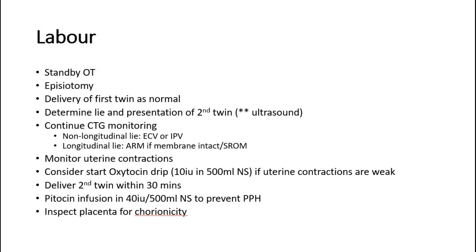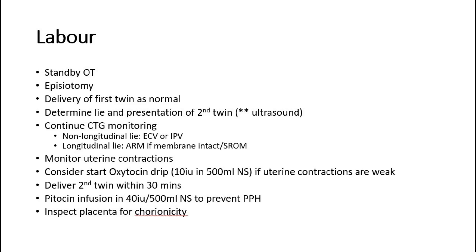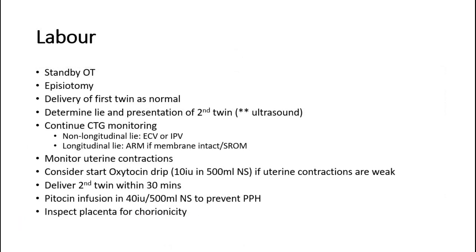During labour, have the OT on standby and perform episiotomy. Deliver the first twin as a normal delivery. After delivery of the first twin, determine the lie and presentation of the second twin via ultrasound and continue CTG monitoring. If the second twin is in a non-longitudinal lie, perform external cephalic version, or if unsuccessful, internal podalic version. If the second twin is in longitudinal lie with the presenting part in the pelvis, perform artificial rupture of membranes if still intact. Monitor uterine contractions and consider oxytocin if contractions are weak. The second twin must be delivered within 30 minutes. Give oxytocin infusion to prevent postpartum haemorrhage. In the third stage of labour, inspect the placenta to confirm chorionicity.